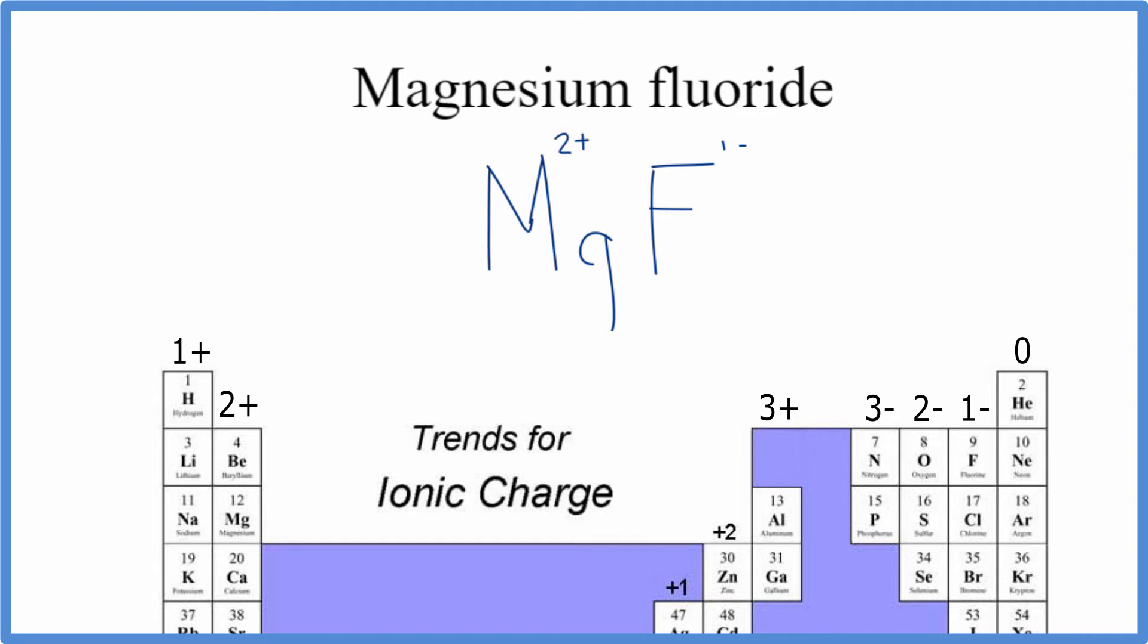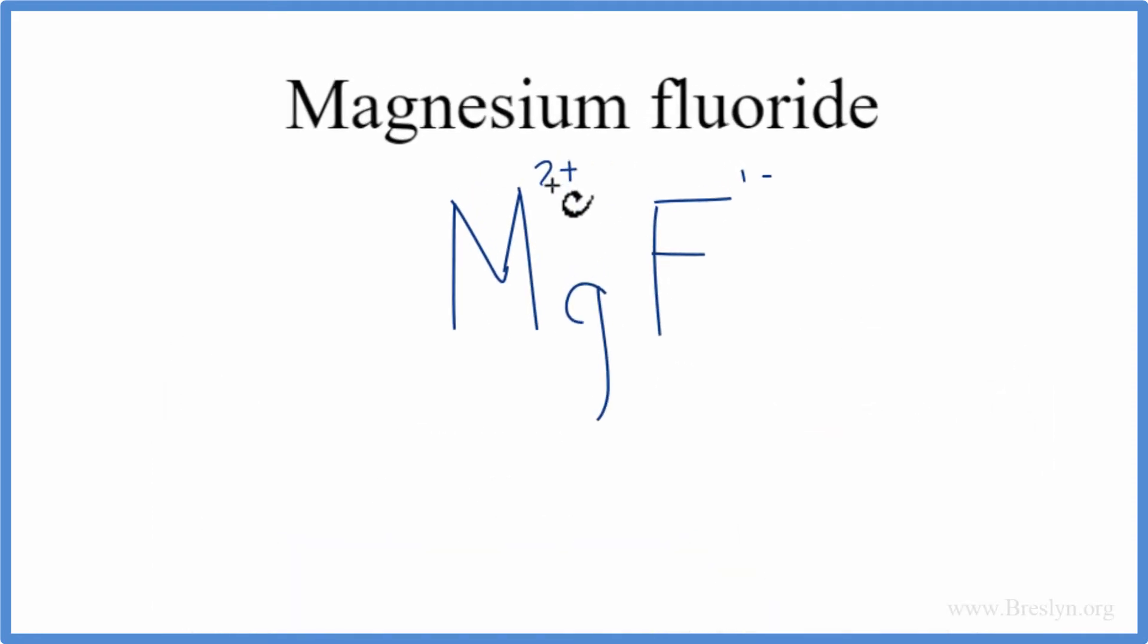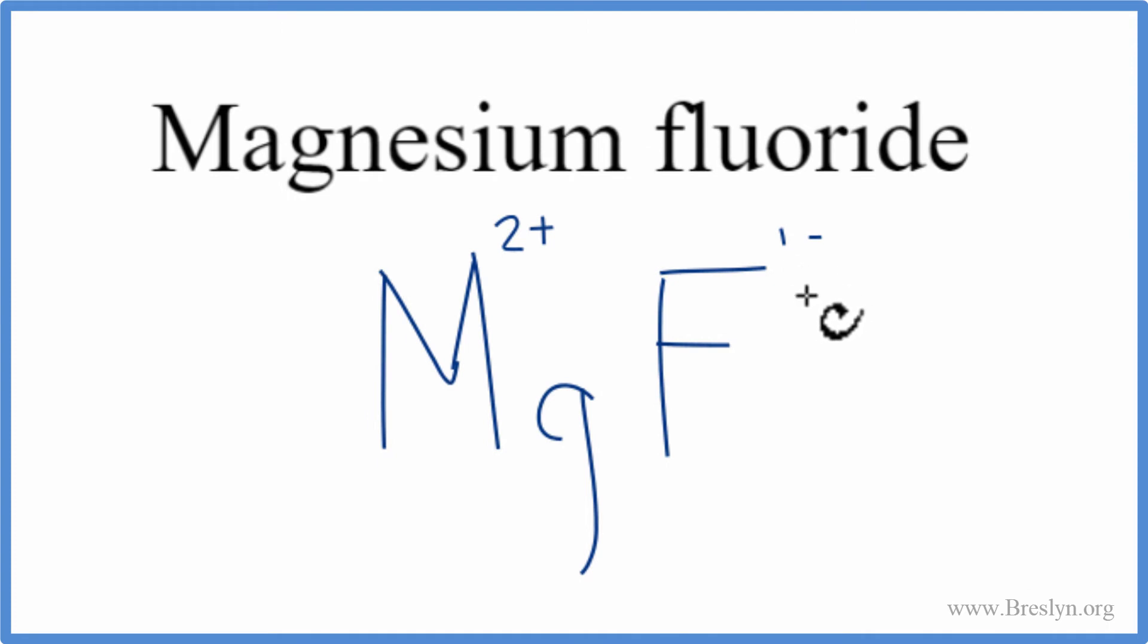So these charges need to add up to 0 to have a net charge of 0. Right now we have a plus 2 and a minus 1, they don't add up to 0.